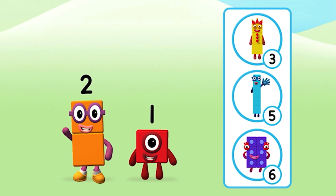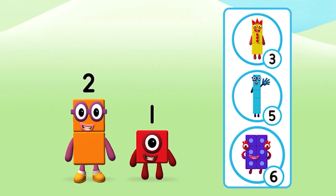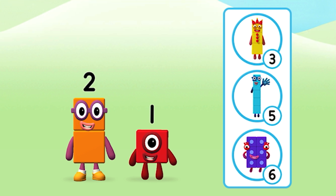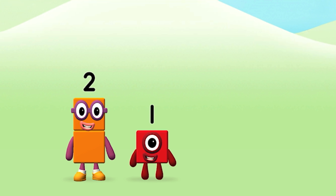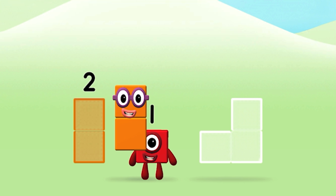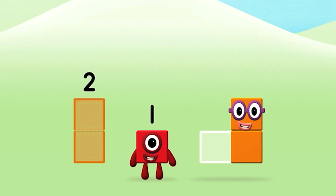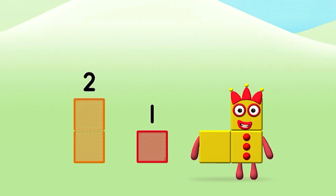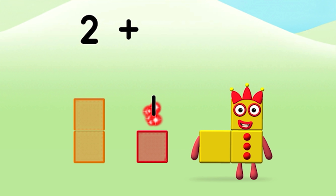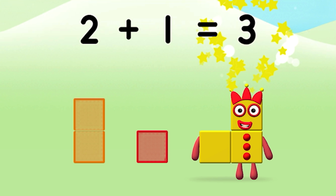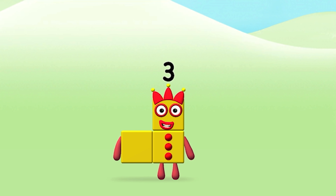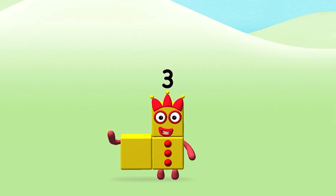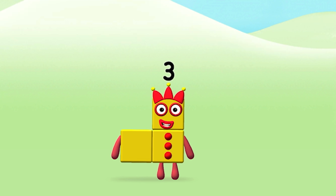What number block will you make when you add these two number blocks together? Correct! You chose the right answer! Now add the number blocks together. Two plus one equals three! Congratulations! You made number block three!